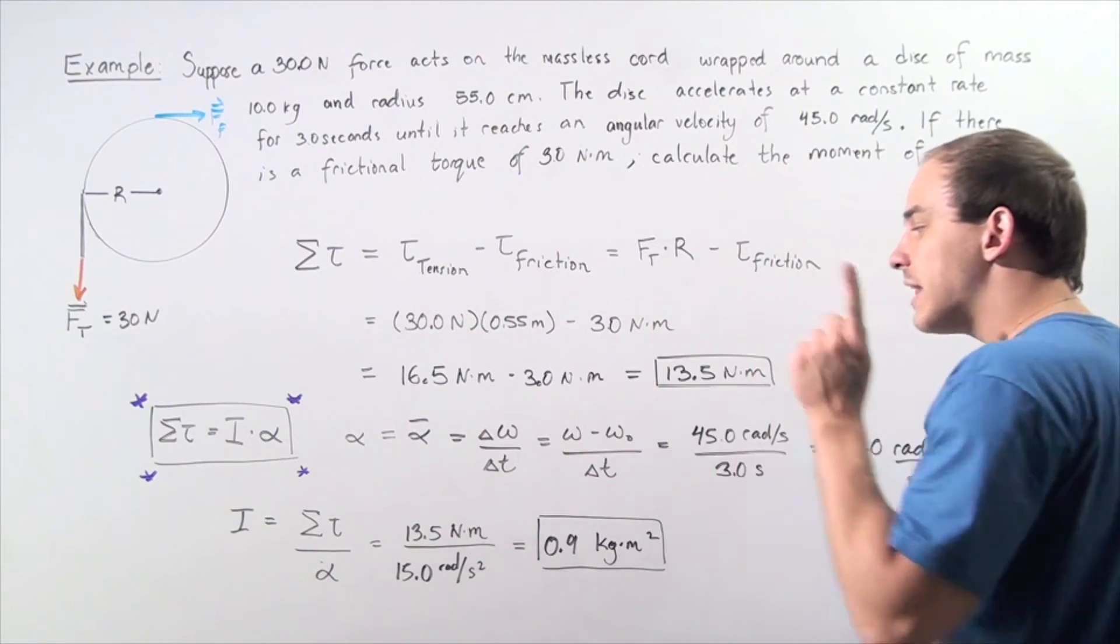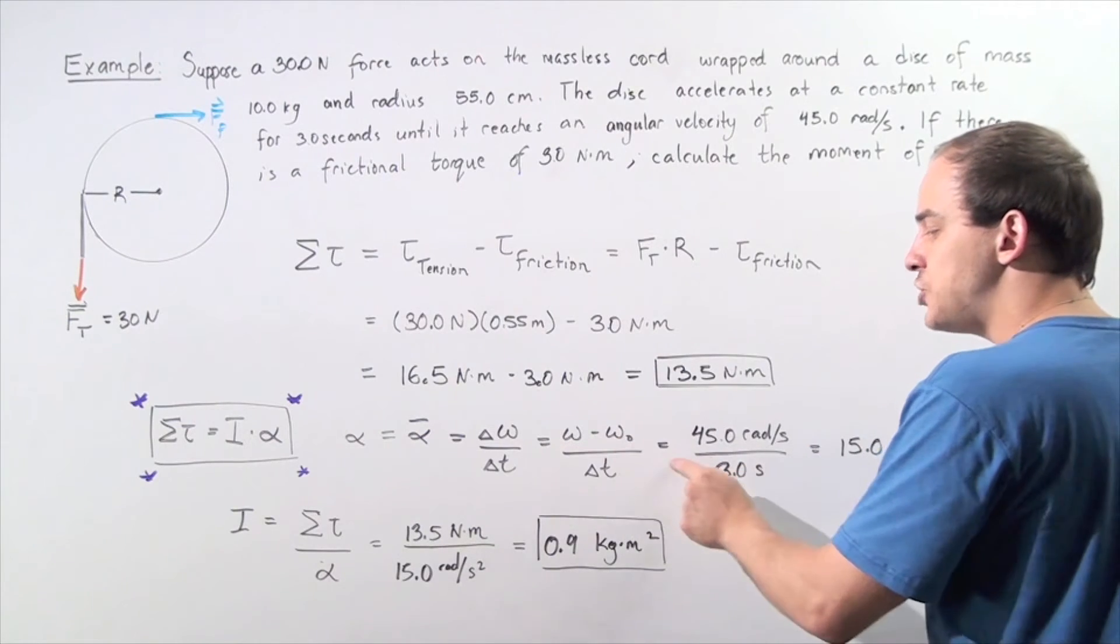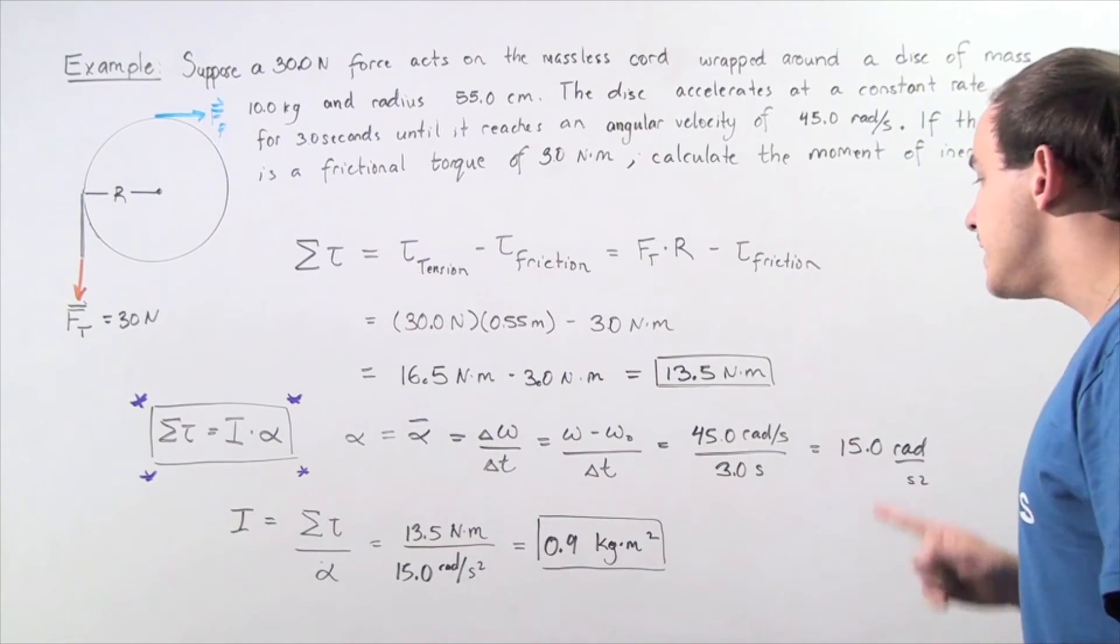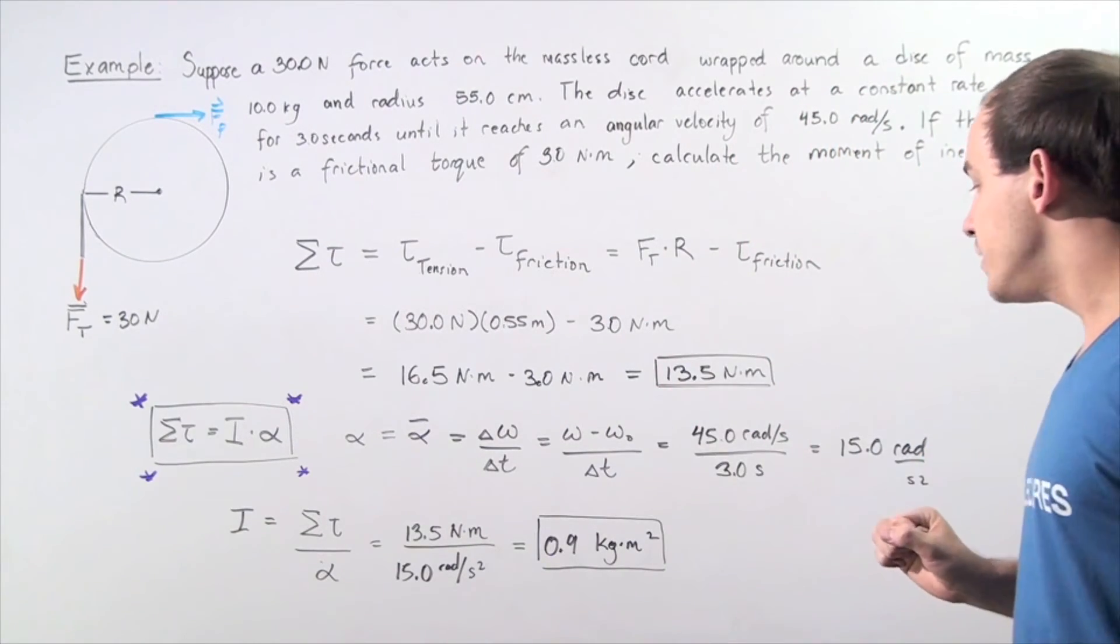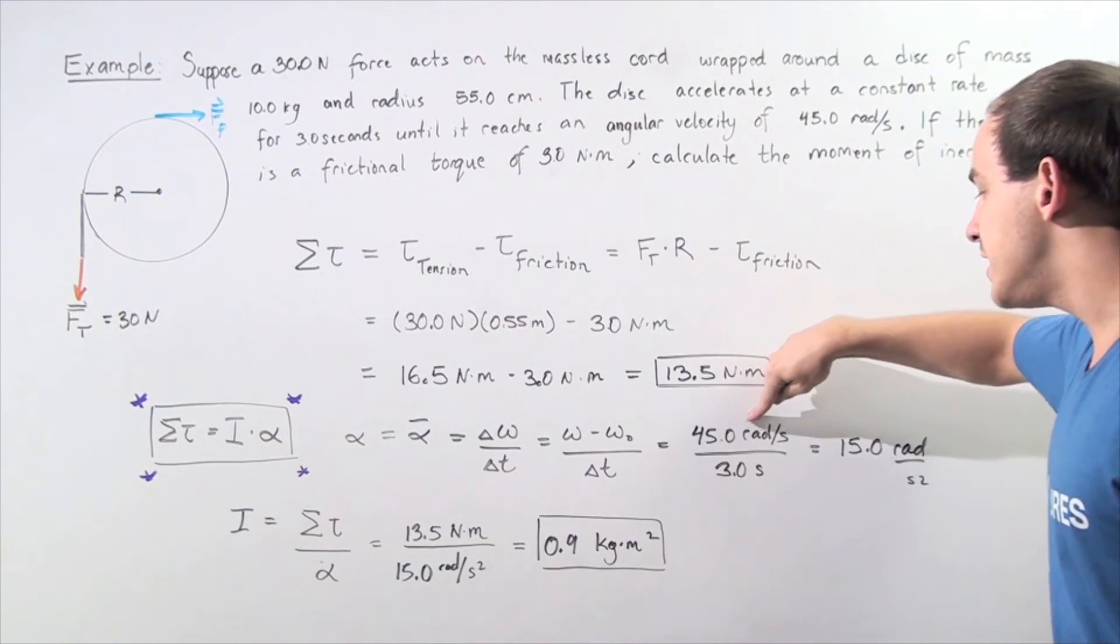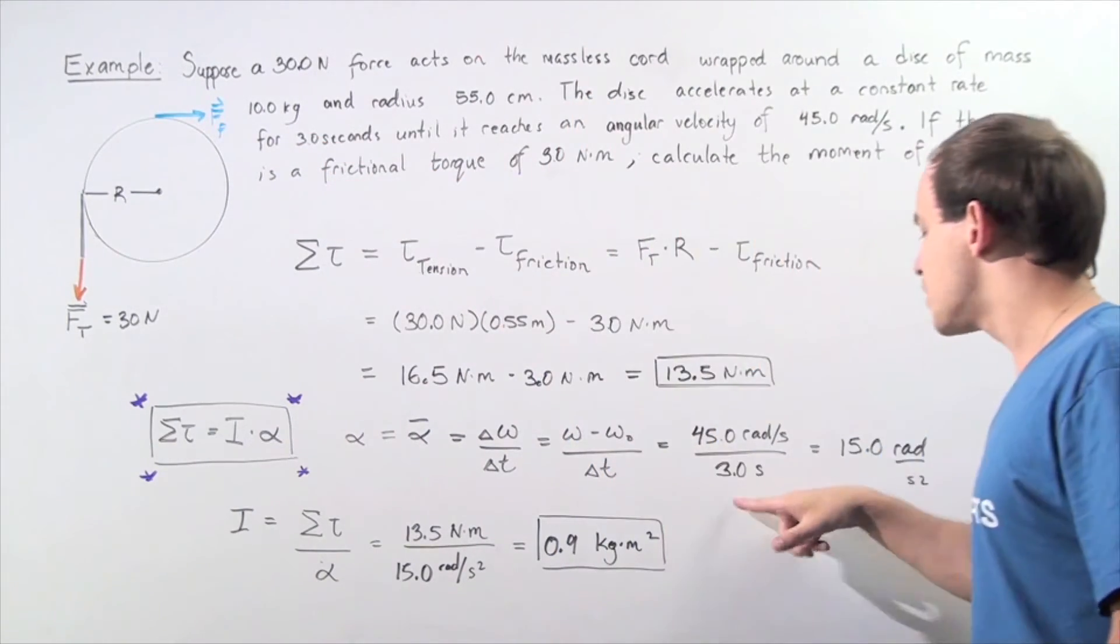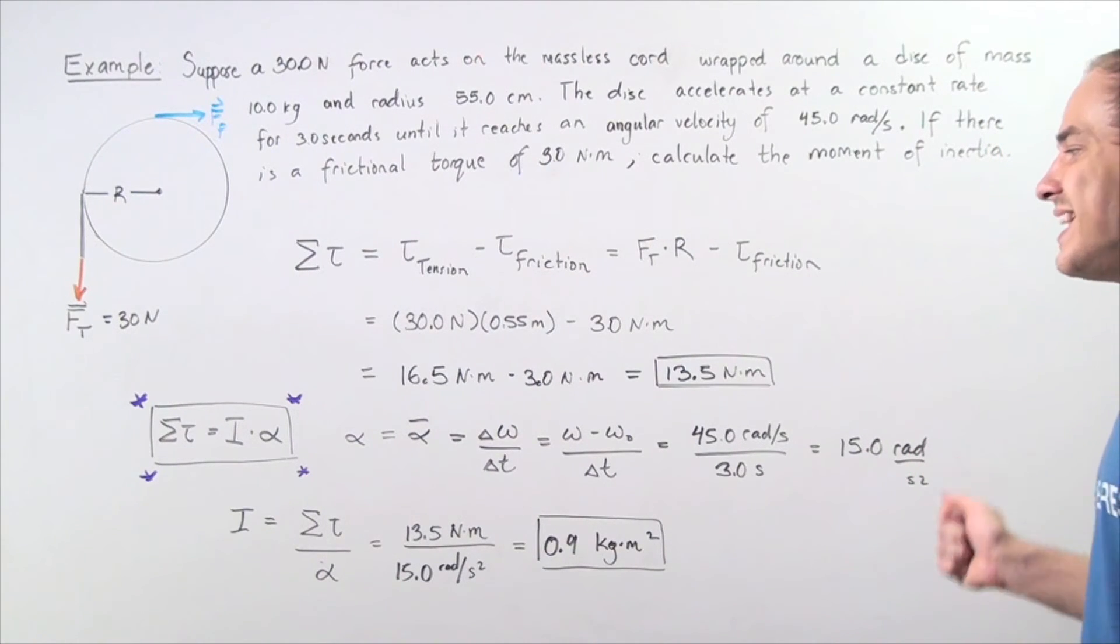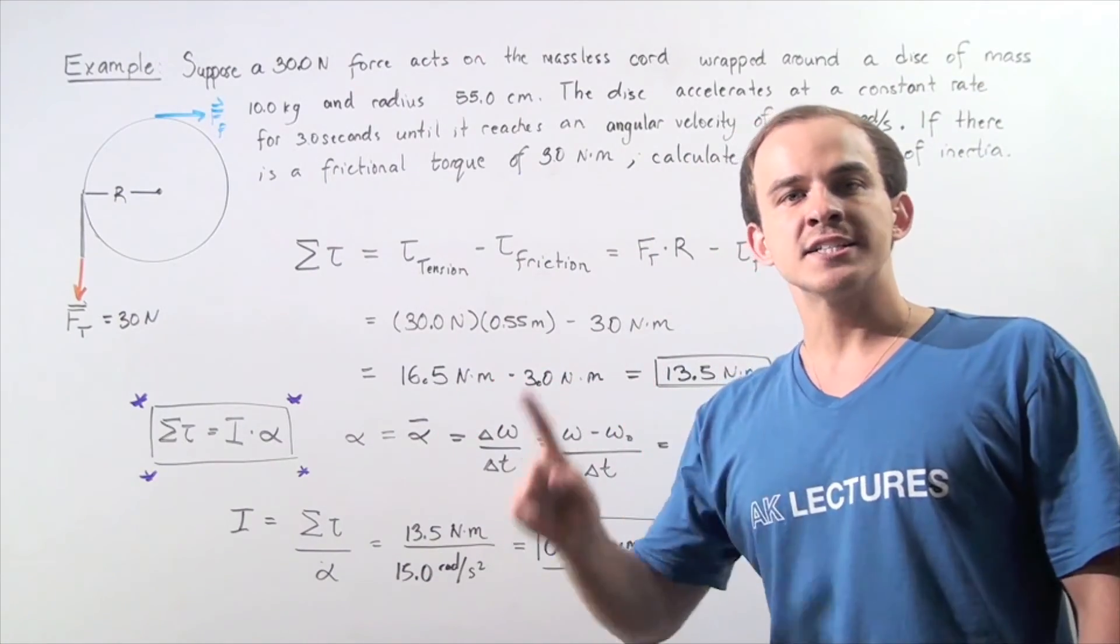The final angular velocity minus the initial angular velocity divided by the change in time. The final angular velocity is 45 radians per second and the initial is 0. So we have 45 radians per second divided by 3 seconds, giving us 15 radians per second squared as our angular acceleration.